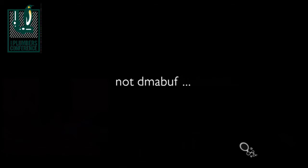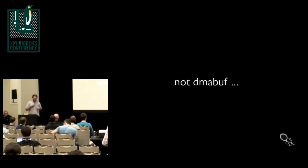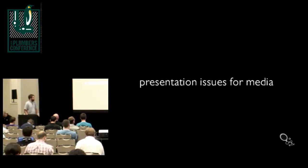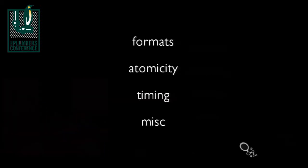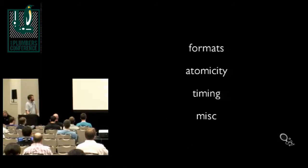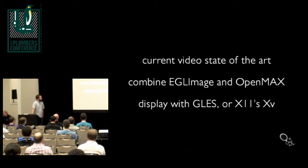This is a semi-constructed grab bag of issues we tend to have with media when we're trying to go from media decode blocks — typically H.264, MPEG-4, and so on — into overlays. The main three issues are format, atomicity, and timing, which I'll cover individually.